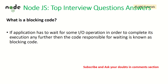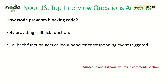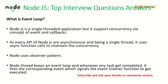What is blocking code? If an application has to wait for some input or output operation to complete its execution, then the code responsible for waiting is known as blocking code. For example, if request 1 needs to be completed before request 2 is taken up, that particular process is called blocking code. How do you prevent blocking code? We prevent it by always implementing the callback mechanism — callback functions get called whenever corresponding events are triggered.